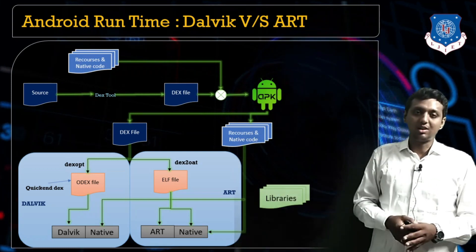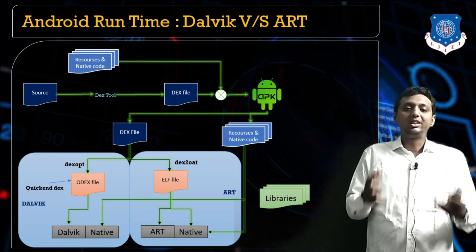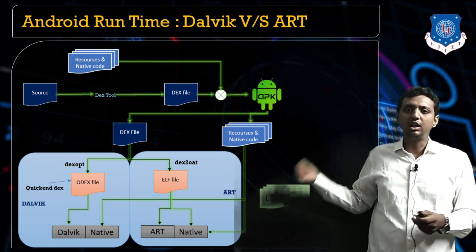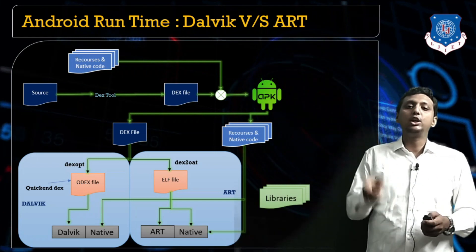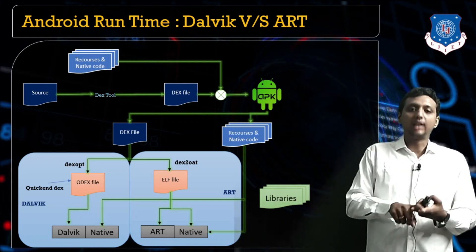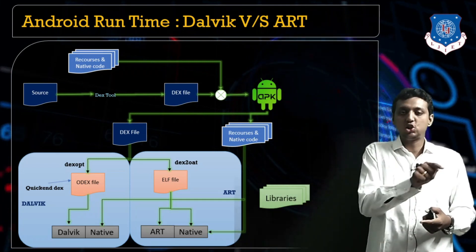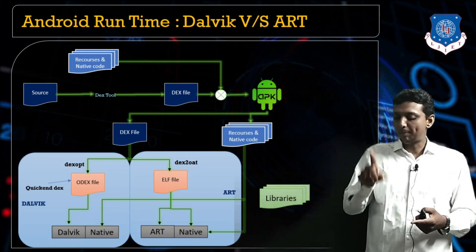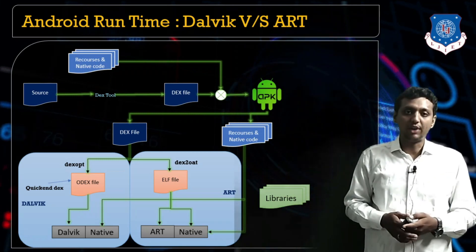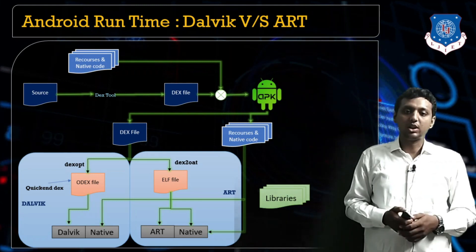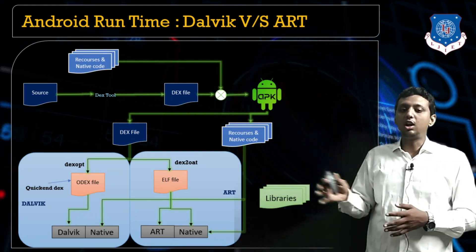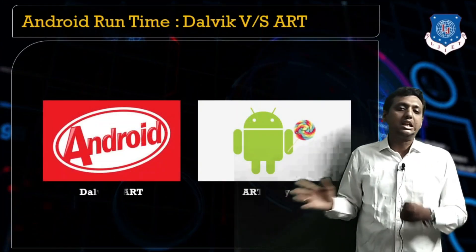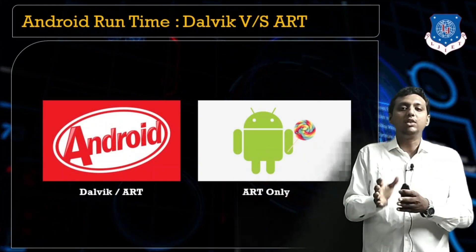So Dalvik compiles code at runtime, while in ART the code is already compiled before runtime — meaning it's compiled when you install the application. When you click on the application you just start the executable file, saving time. This is all about ART and DVM. Android developers tried both ART and Dalvik in Android KitKat.